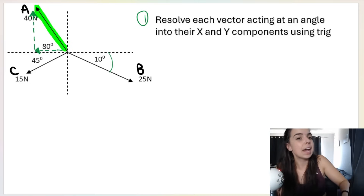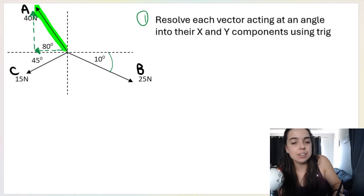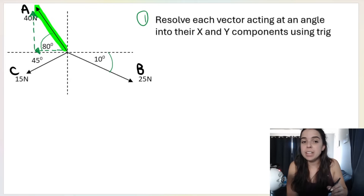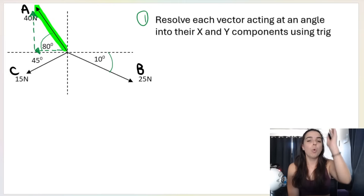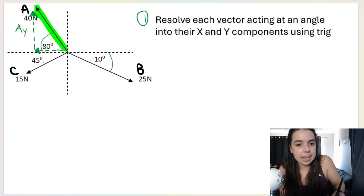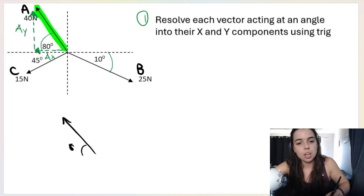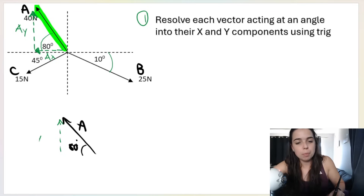Vector A is going up and to the left, and there's an angle of 80 degrees given. All I've done is broken A up into two vectors: one vertical — I'll call this A-y because it's going along the y-axis — and one horizontal, A-x. Let me separate it away from the diagram so it's easier to see. So this is the 80 degrees; that is vector A. We broke that down into A-y pointing up and A-x pointing to the left.